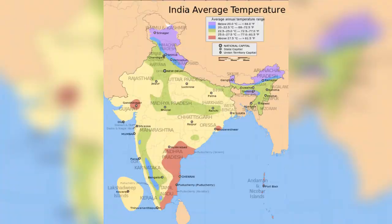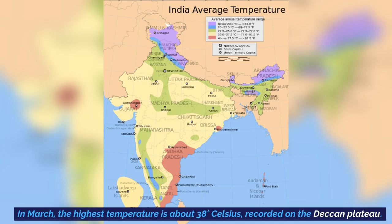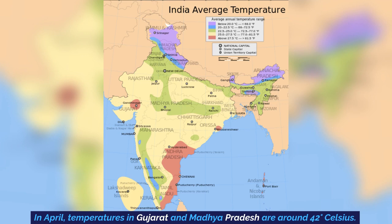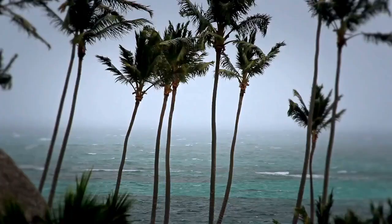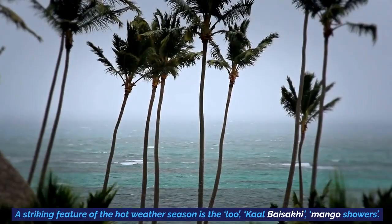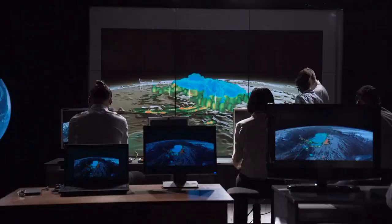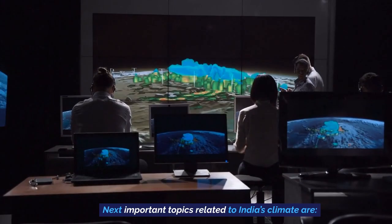Moving to summer: from March to May it is a hot weather season in India. In March, the highest temperature of about 38 degrees Celsius is recorded on the Deccan Plateau. In April, temperatures in Gujarat and Madhya Pradesh are around 42 degrees Celsius. In May, a temperature of 45 degrees Celsius is common in the northwestern part of the country. This diagram shows how temperature is diversified in India. Striking features of the hot weather season are the loo, kalbaisakhi, and mango showers.